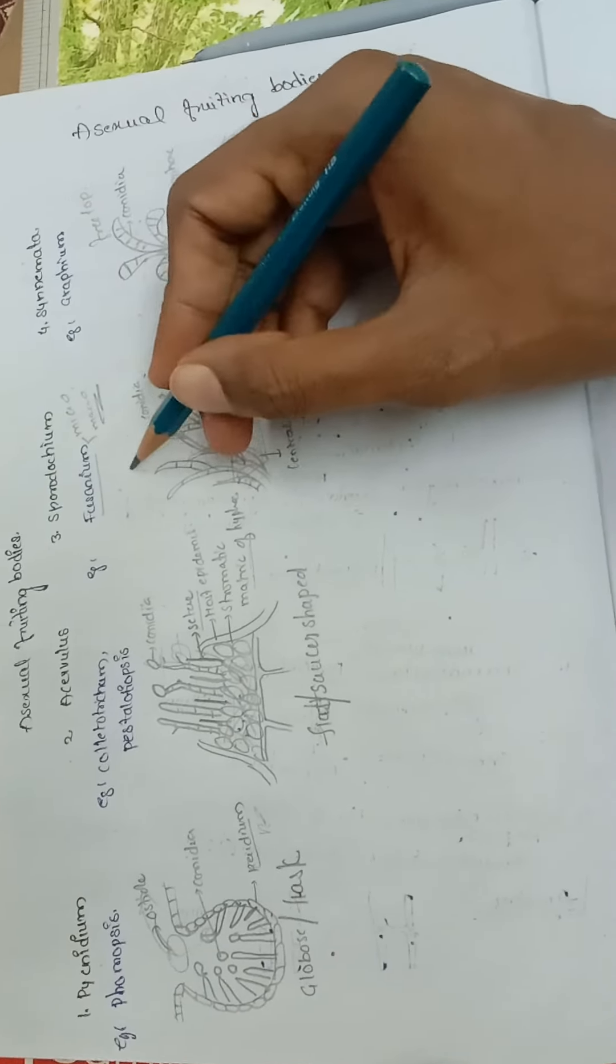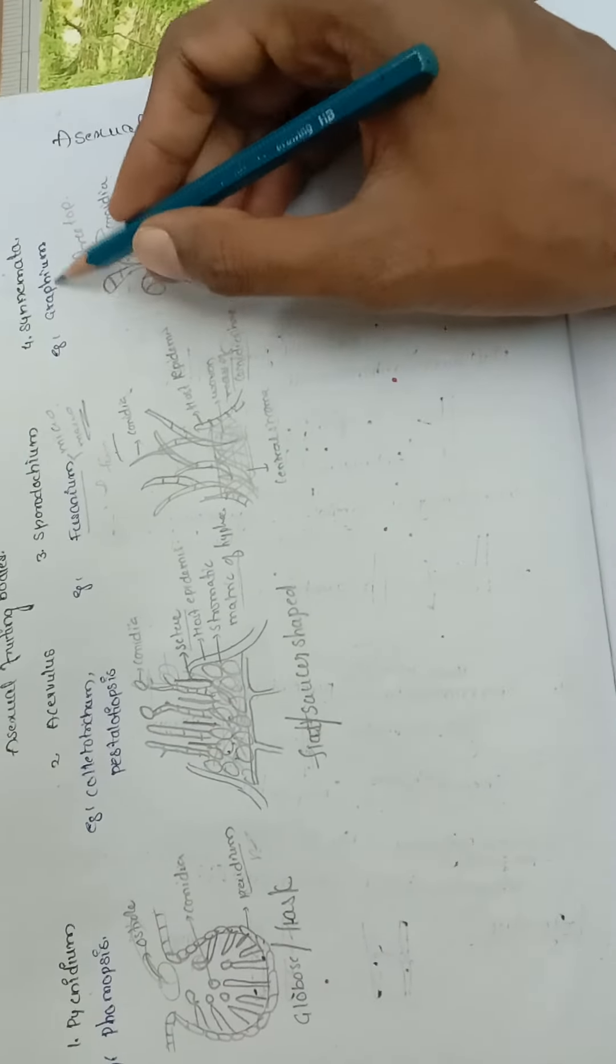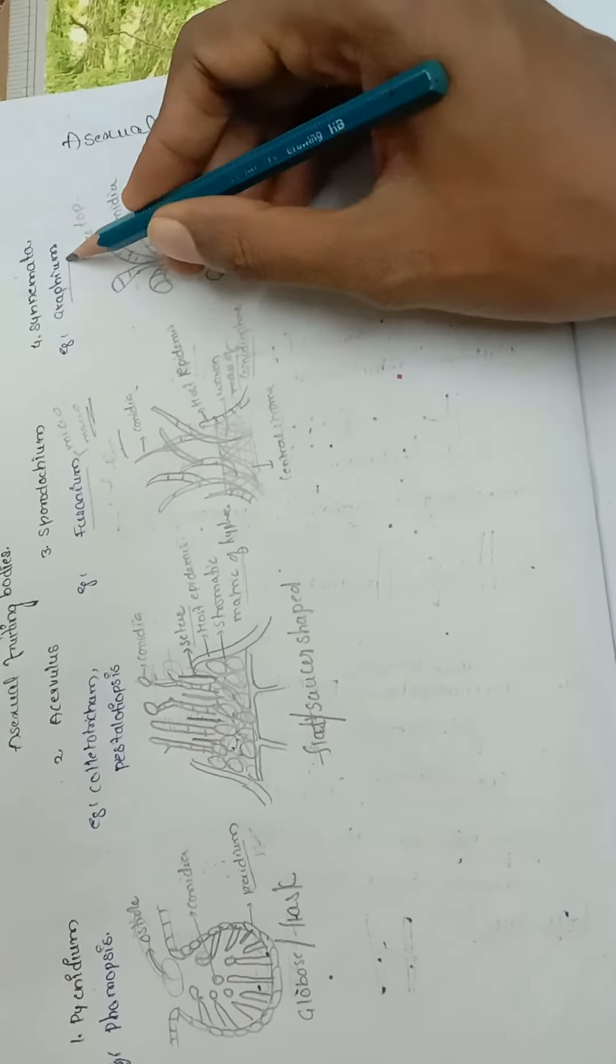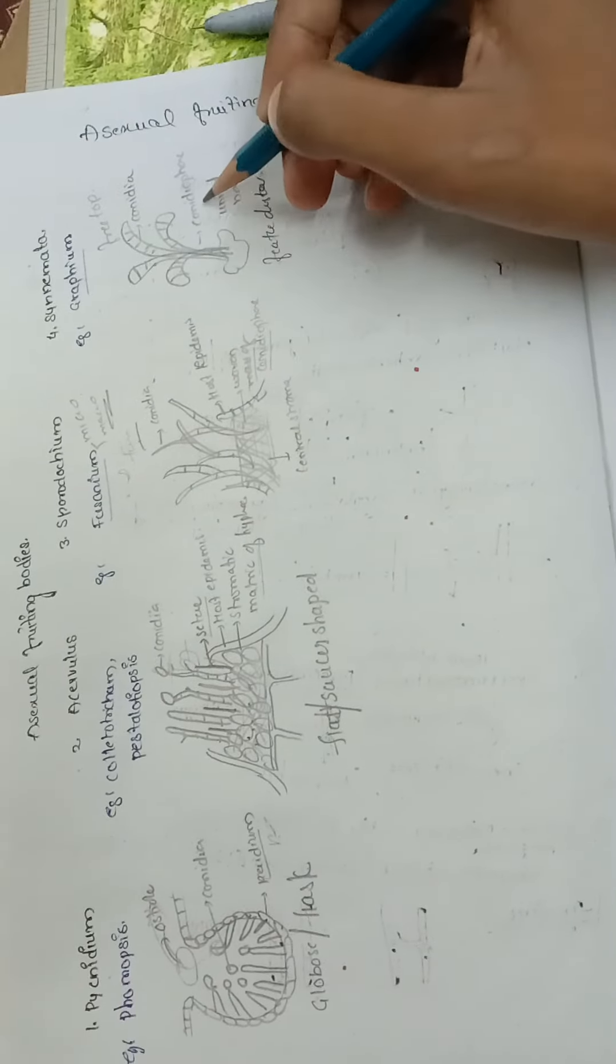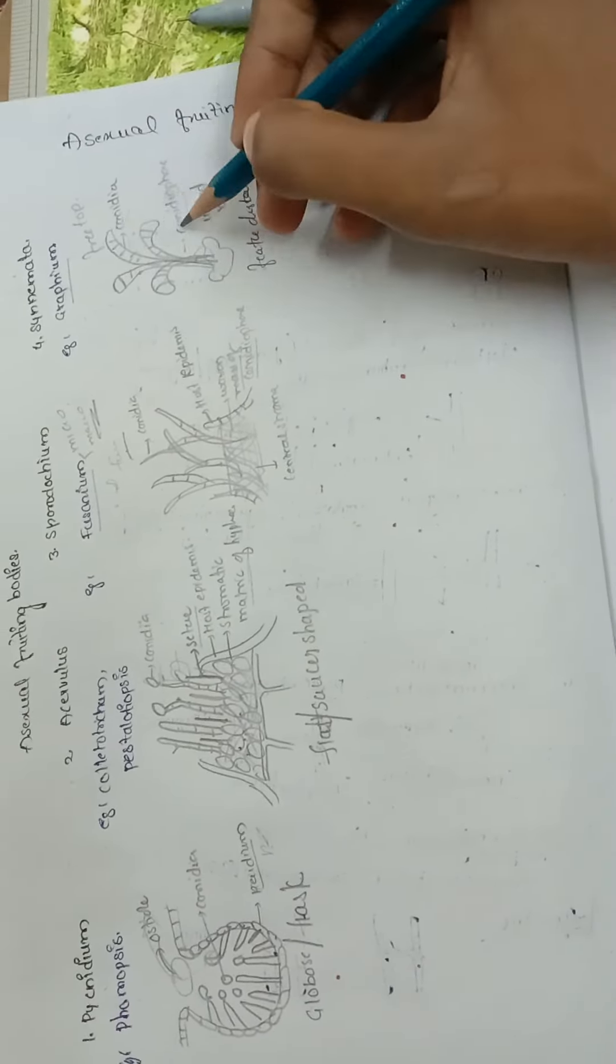Next is synnema. An example is Graphium. The conidiophores are united at the base and free at the top and produce conidia.